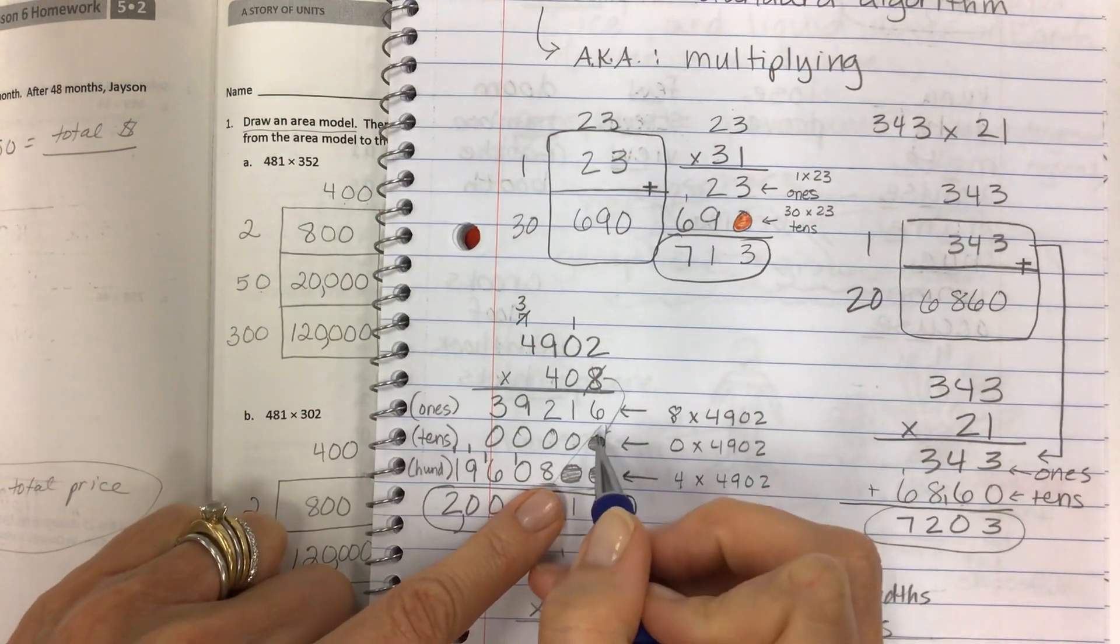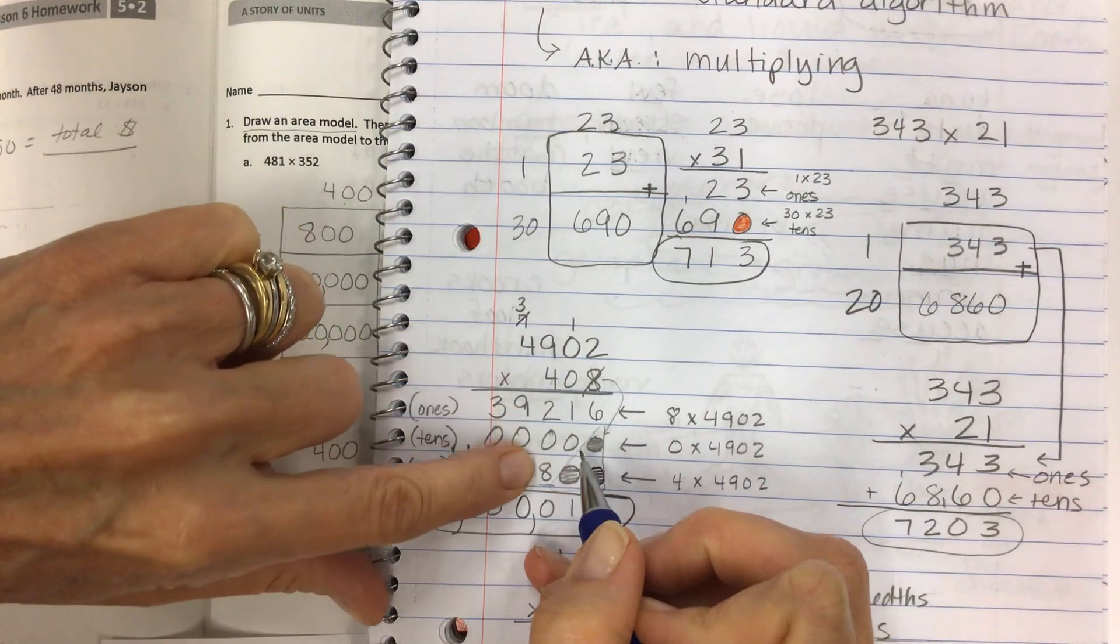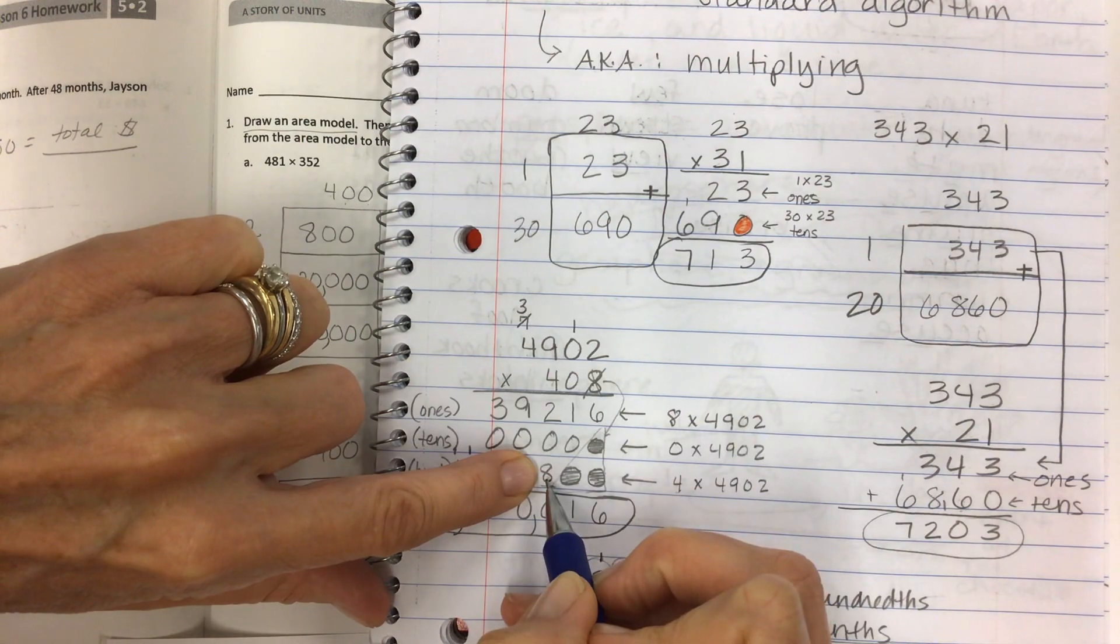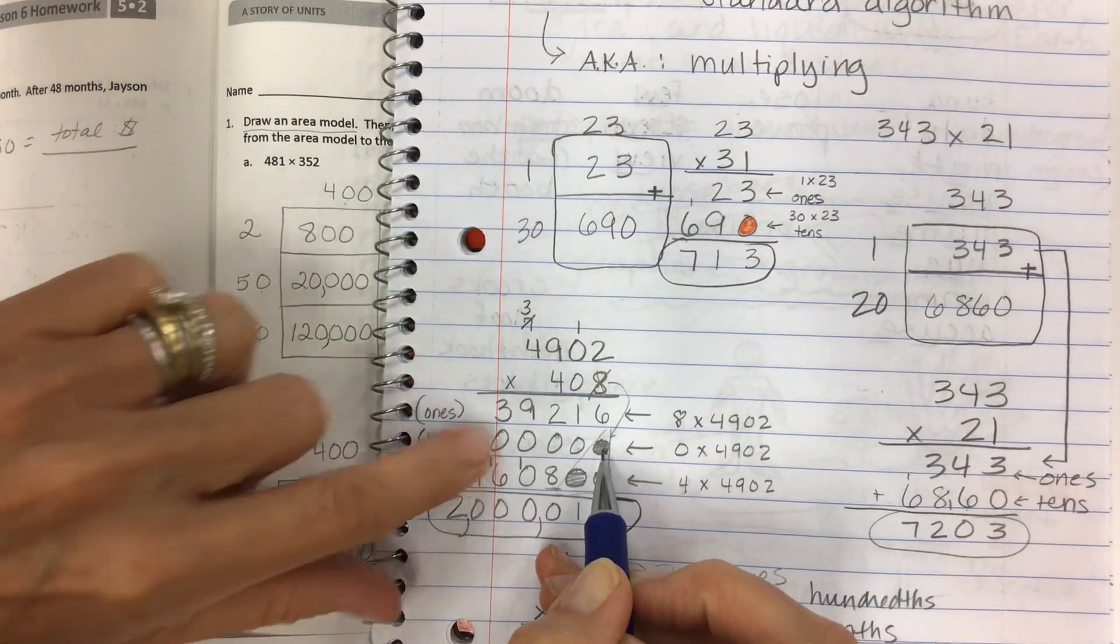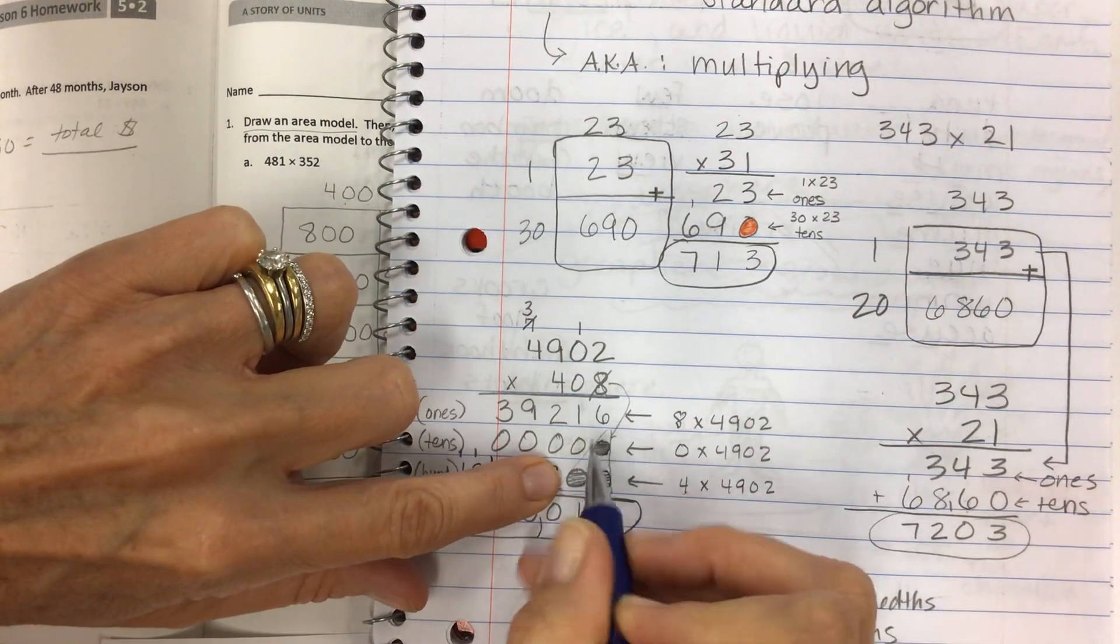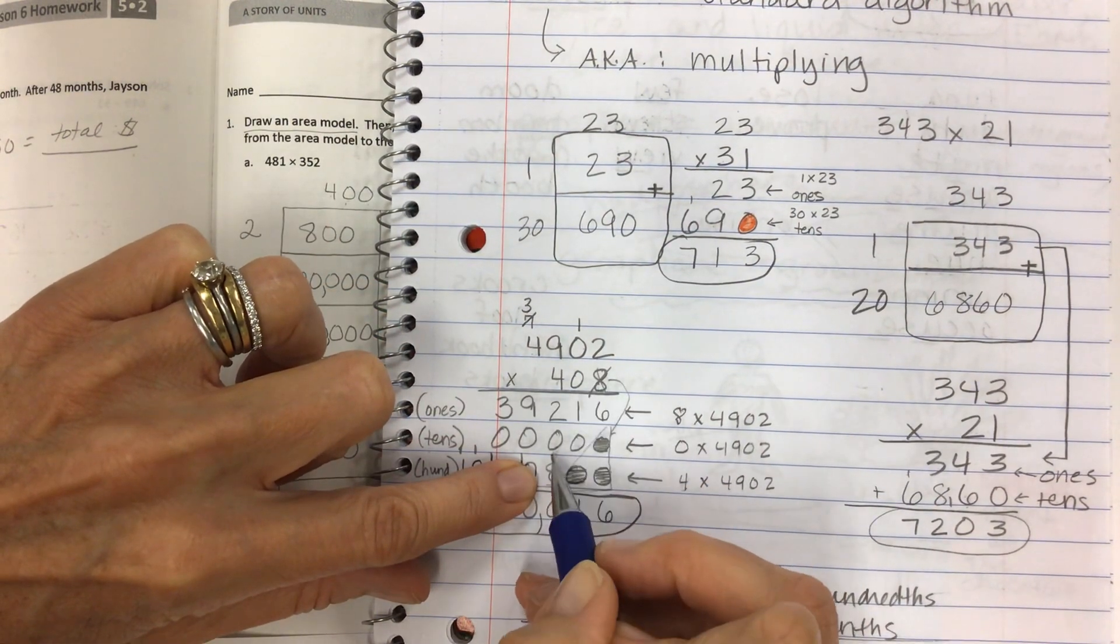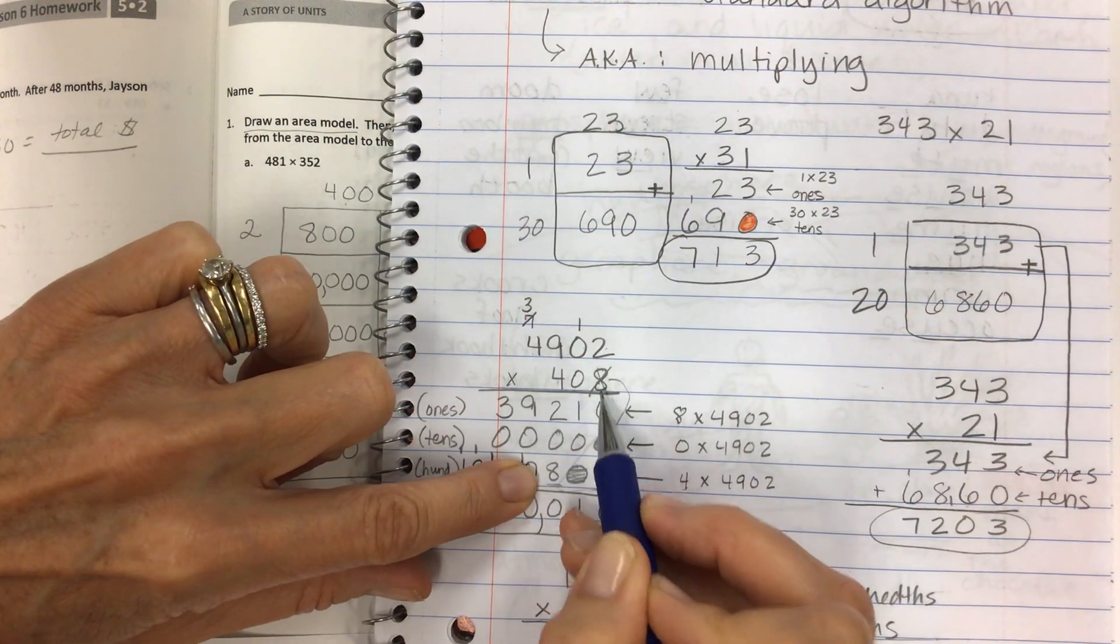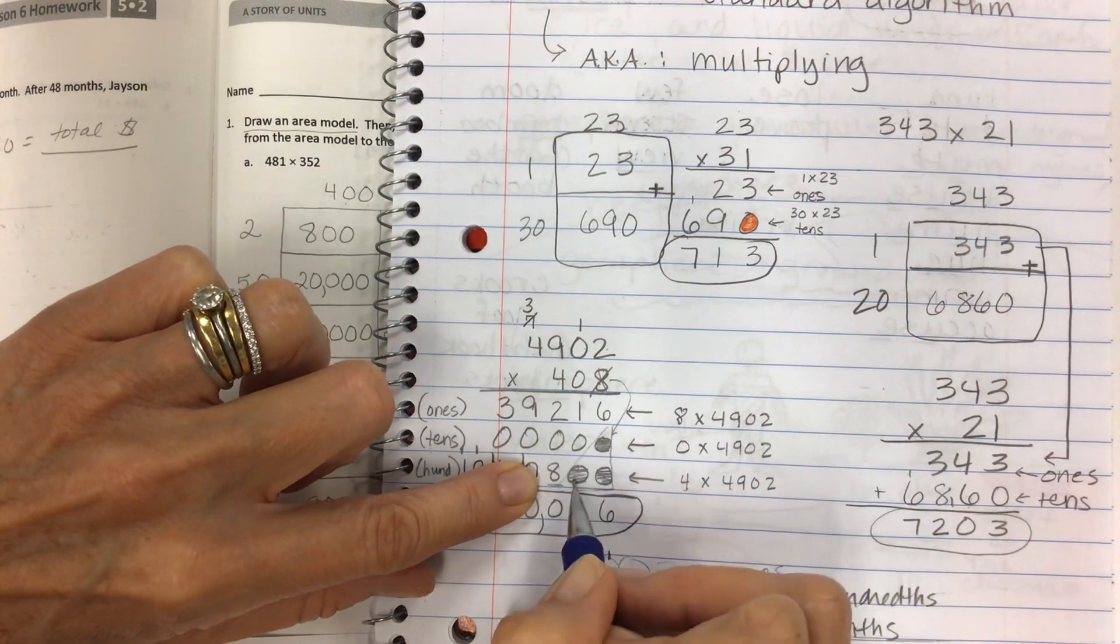So what you can do is you can just not have this row here. However, what you have to be careful of is that when you do start multiplying in the hundreds place that you put your partial product lined up under the proper place value position. So if this row of zeros was not here you would have to have a zero here for the ones, a zero here for the tens, and then you would start with four times two is eight by putting it in the hundreds place because it's really 400 times two is 800.